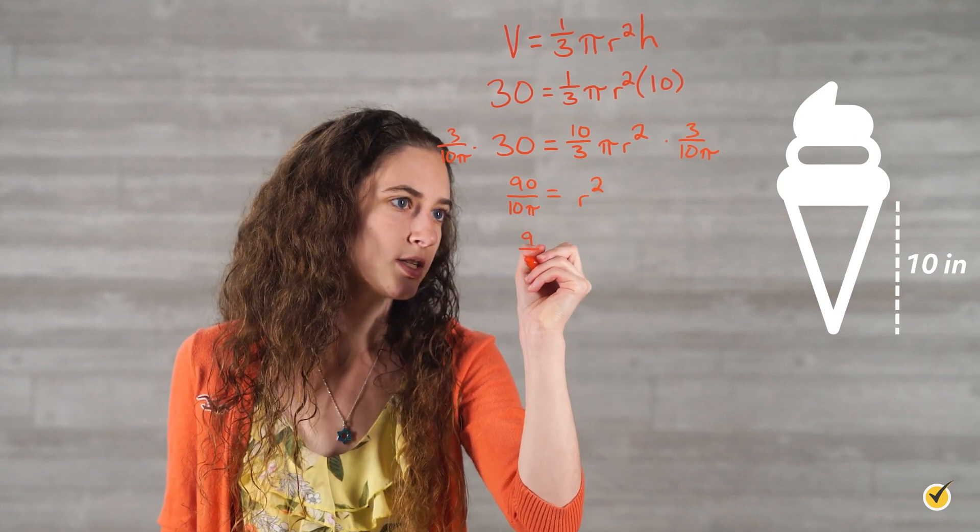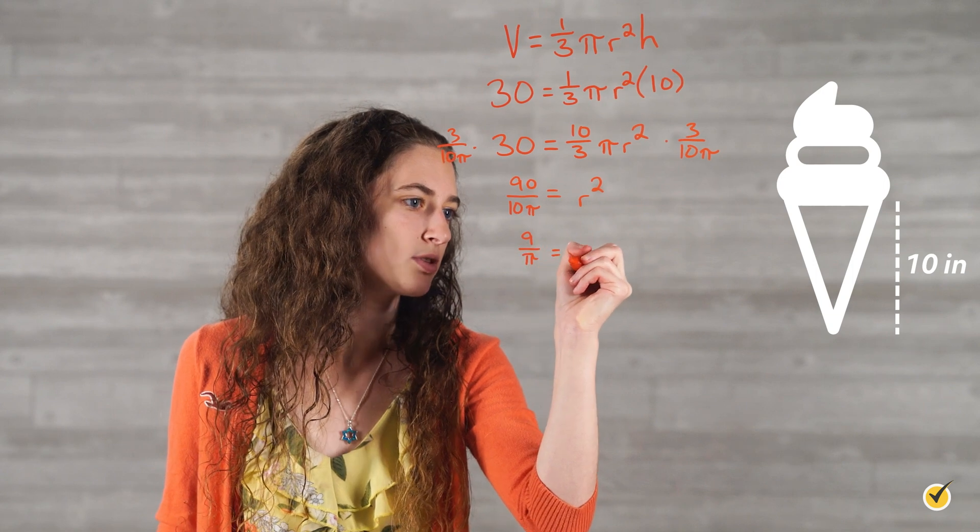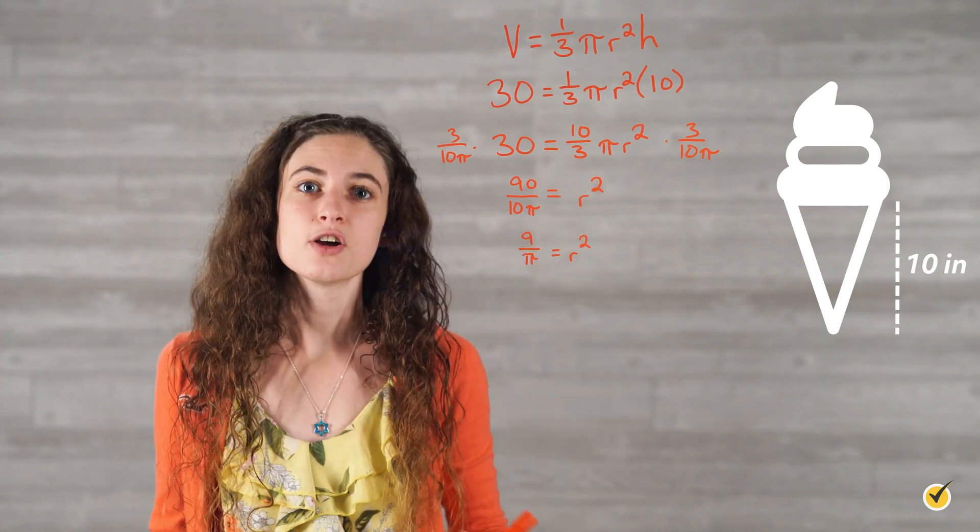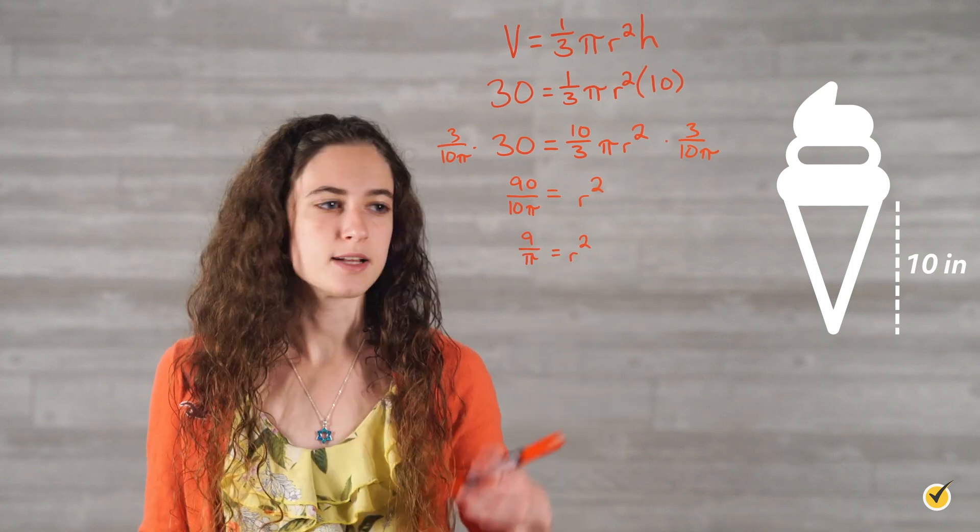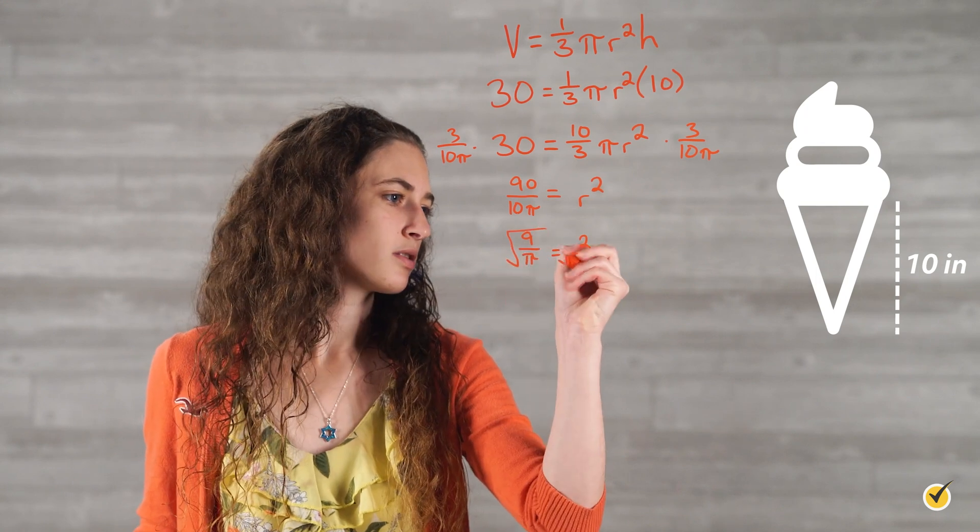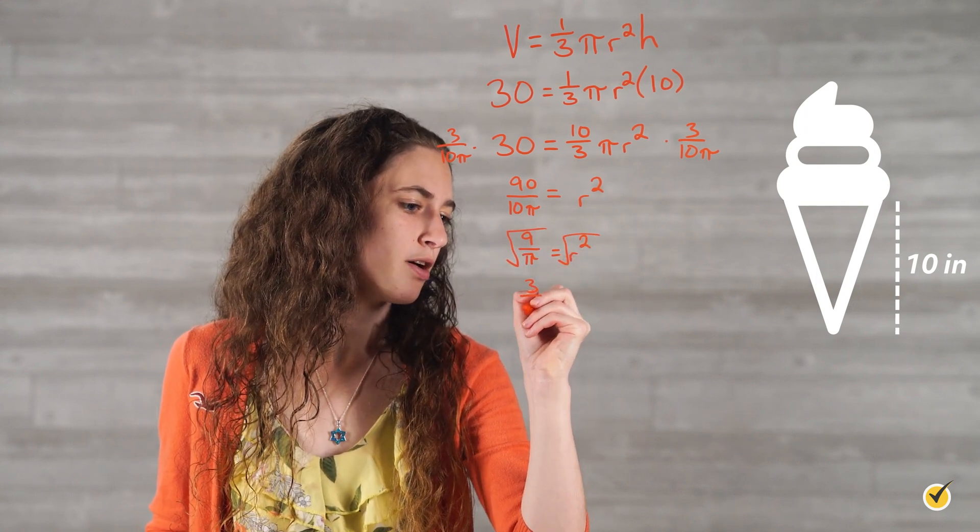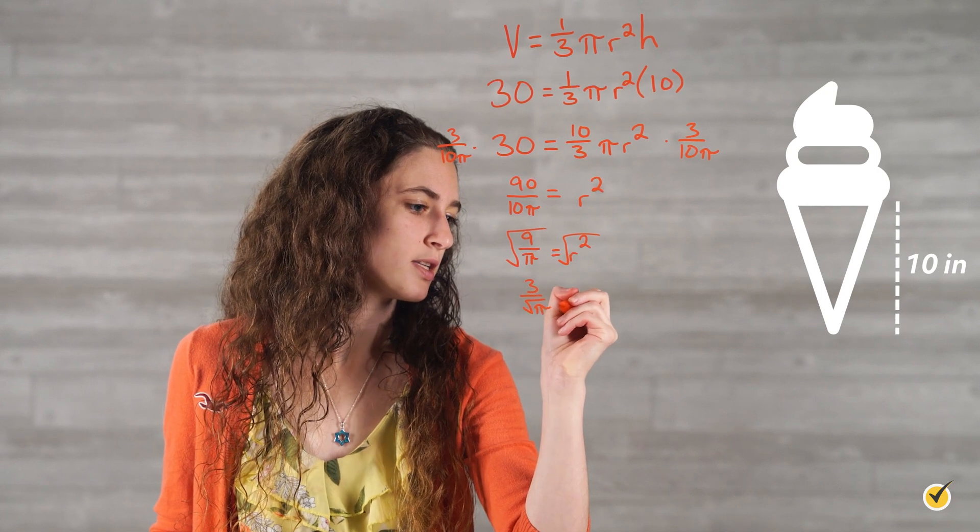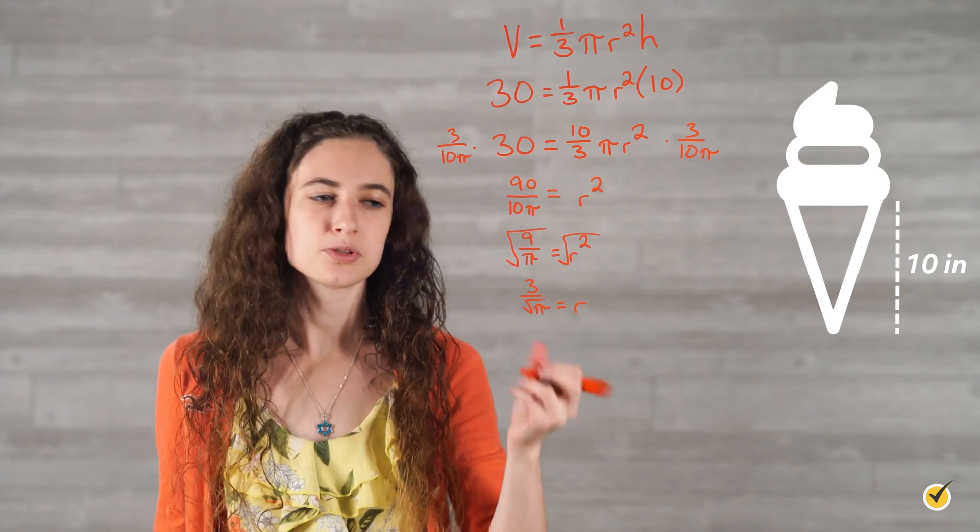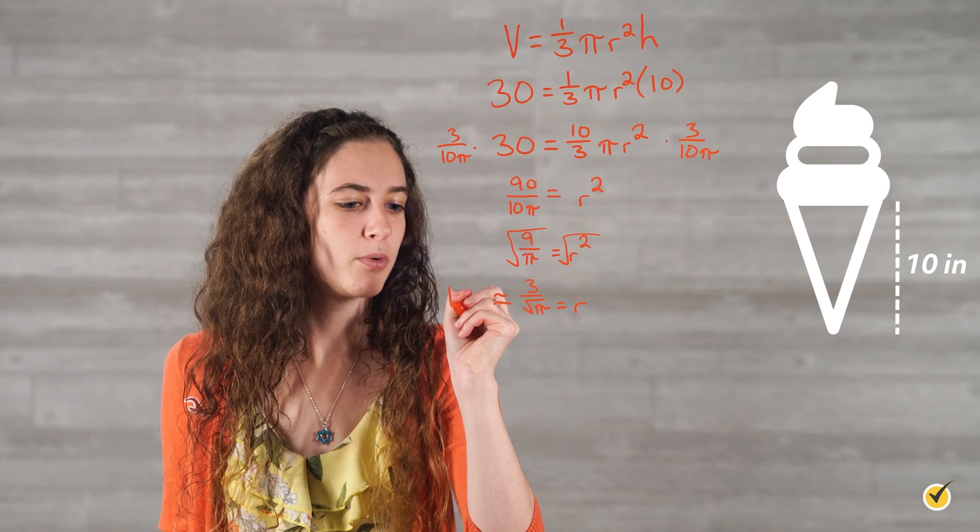We can simplify this further to get 9 over pi is equal to r squared. Then, all we have to do is take the square root of both sides. When we do this, we get 3 over root pi is equal to r, which is approximately equal to 1.7.